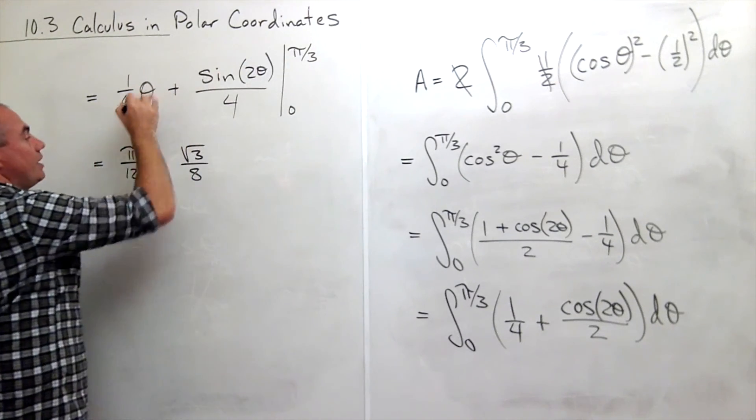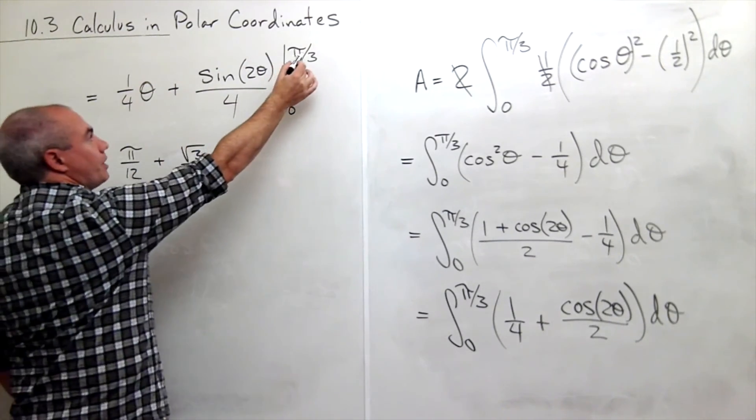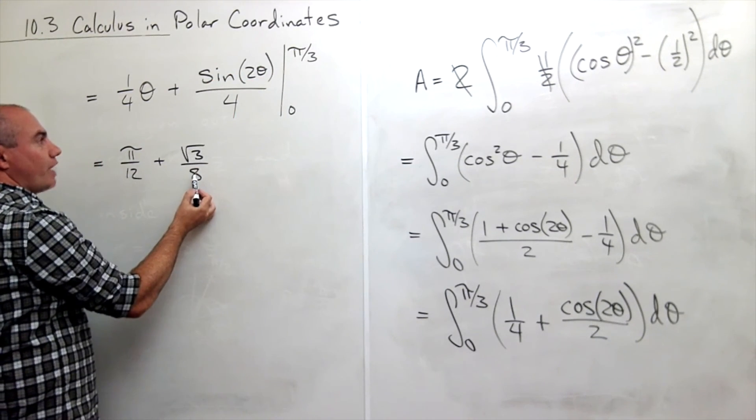Okay, so I plug in pi over 3 here, I get pi over 12. I plug in pi over 3 here, I get root 3 over 8.